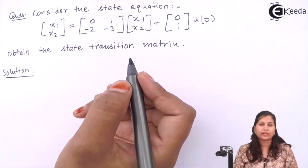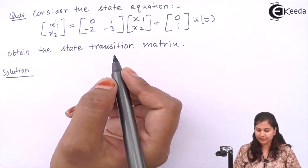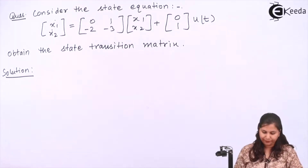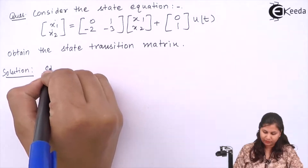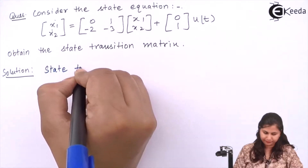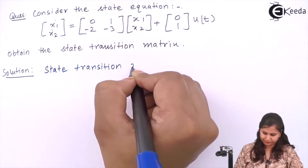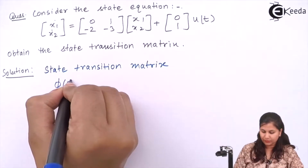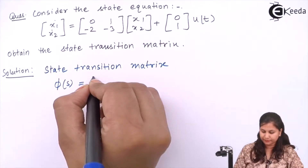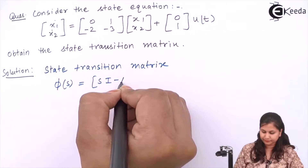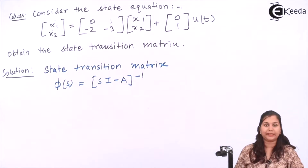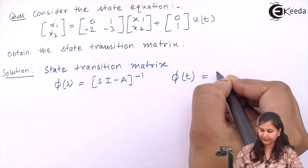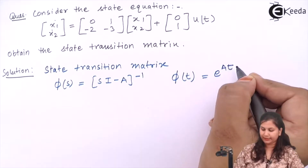We know that the state transition matrix is given by e raised to the power At. So our state transition matrix is Φ(s) equals sI minus A inverse, and if we want to calculate Φ(t) then it is e raised to the power At.